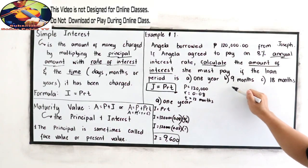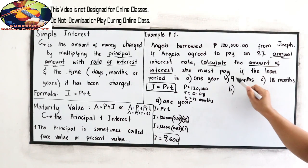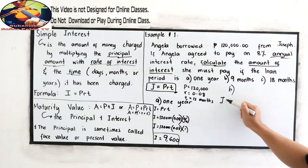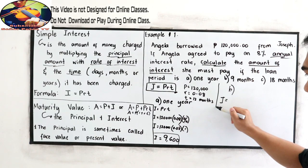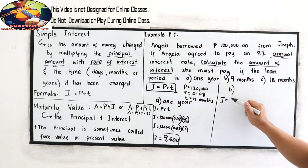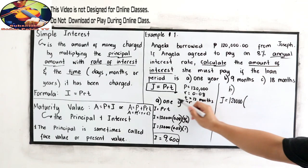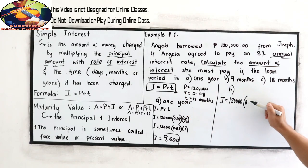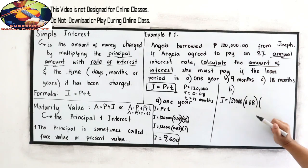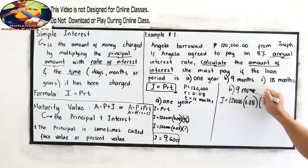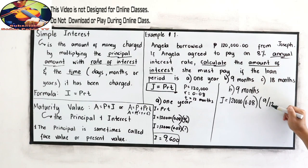Now let us proceed in letter B. Letter B. So 9 months. Interest is equal to our P is 120,000 times our R is 0.08. And our time is 9 months. So that is 9 over 12. So multiply.